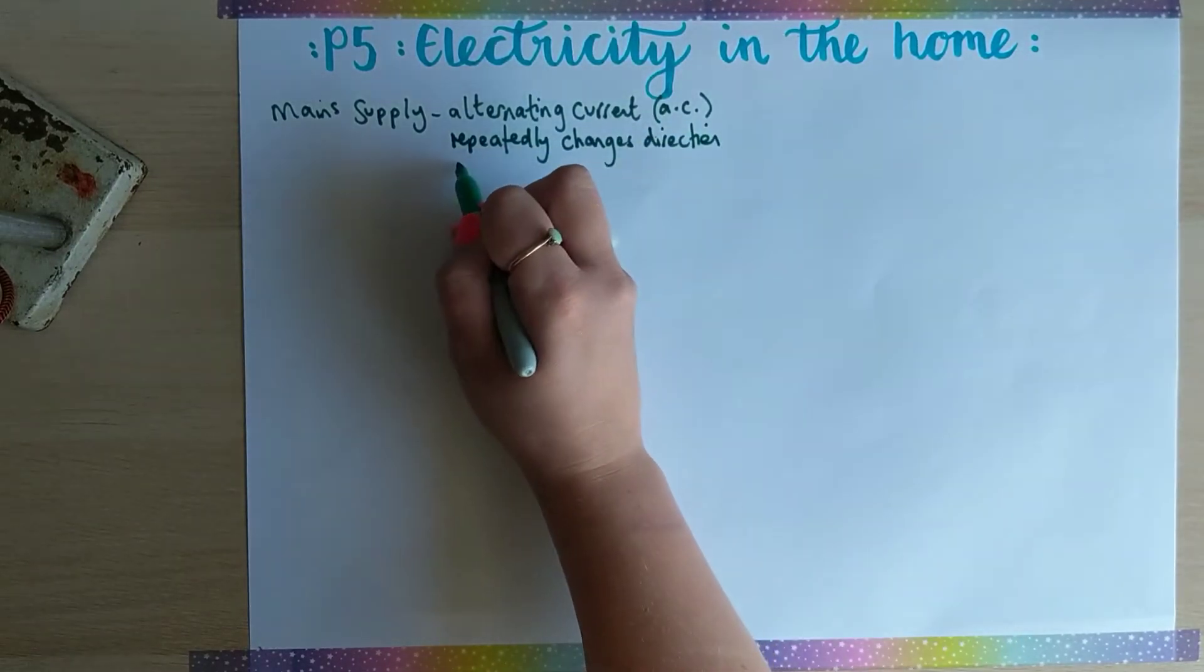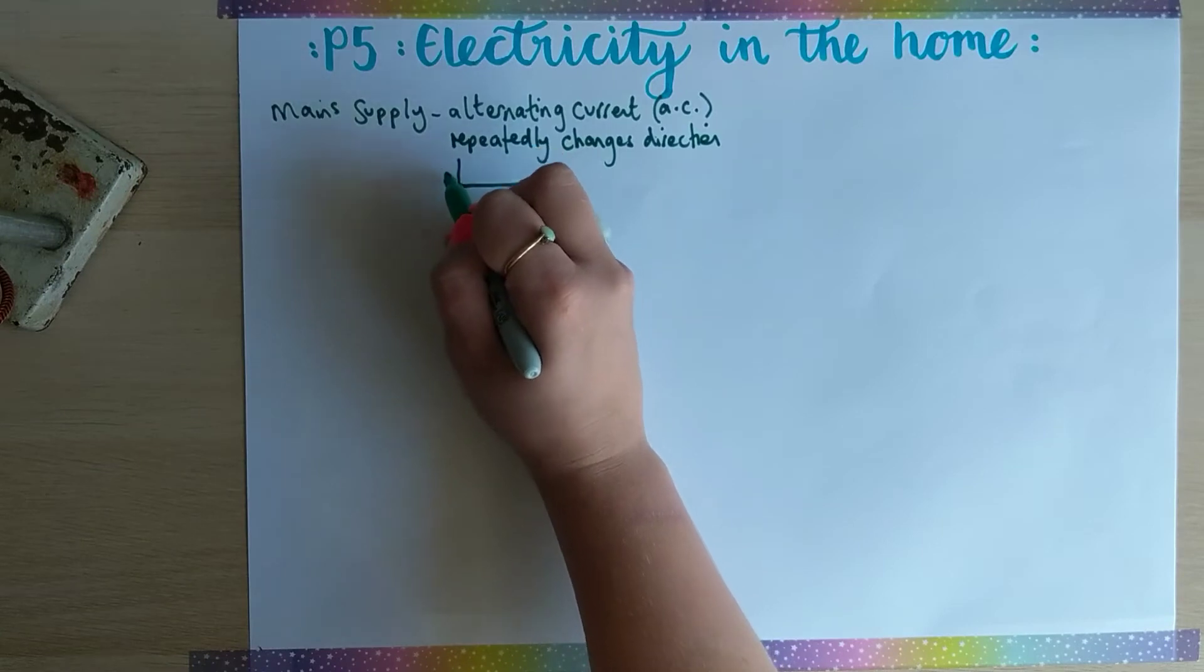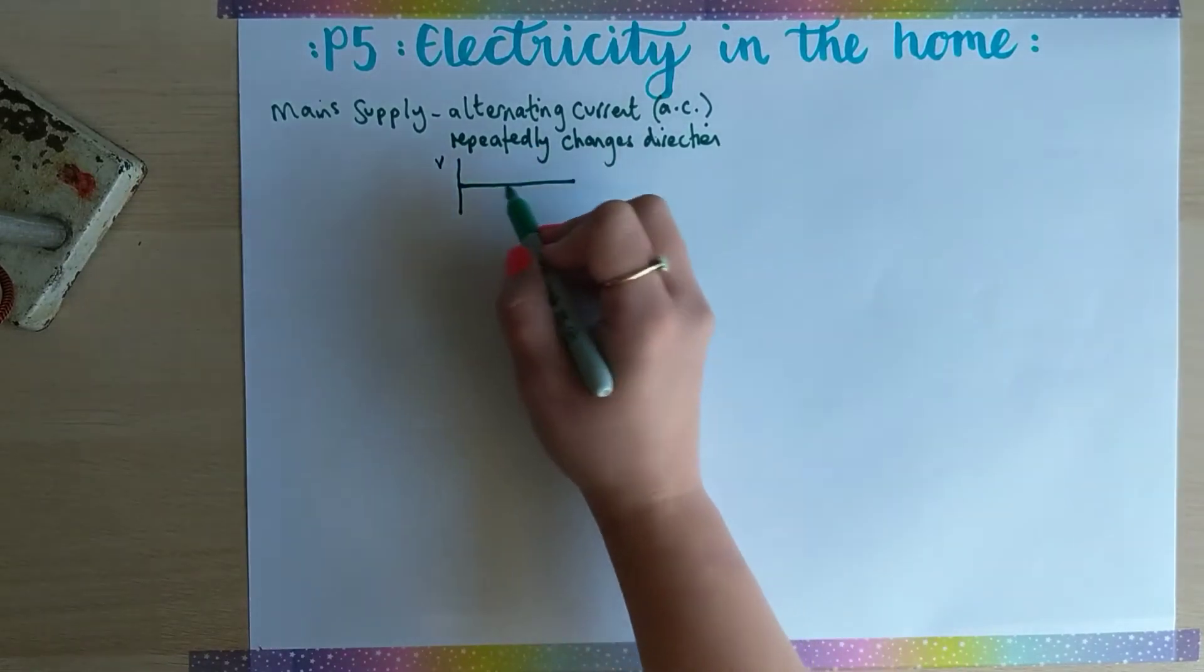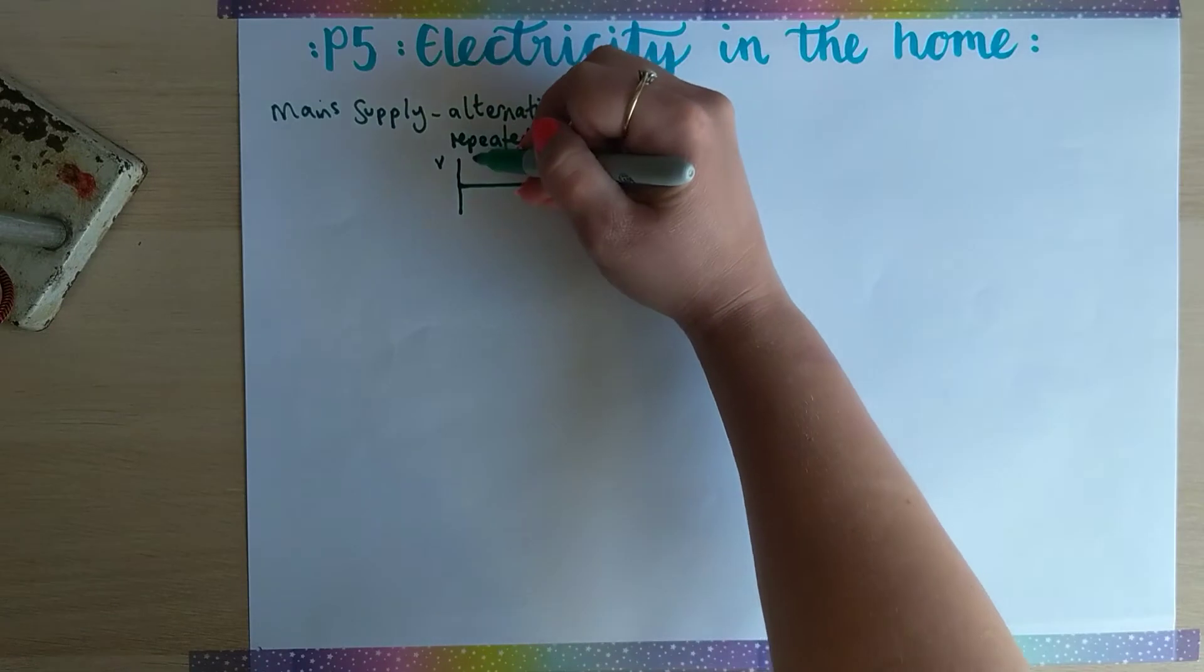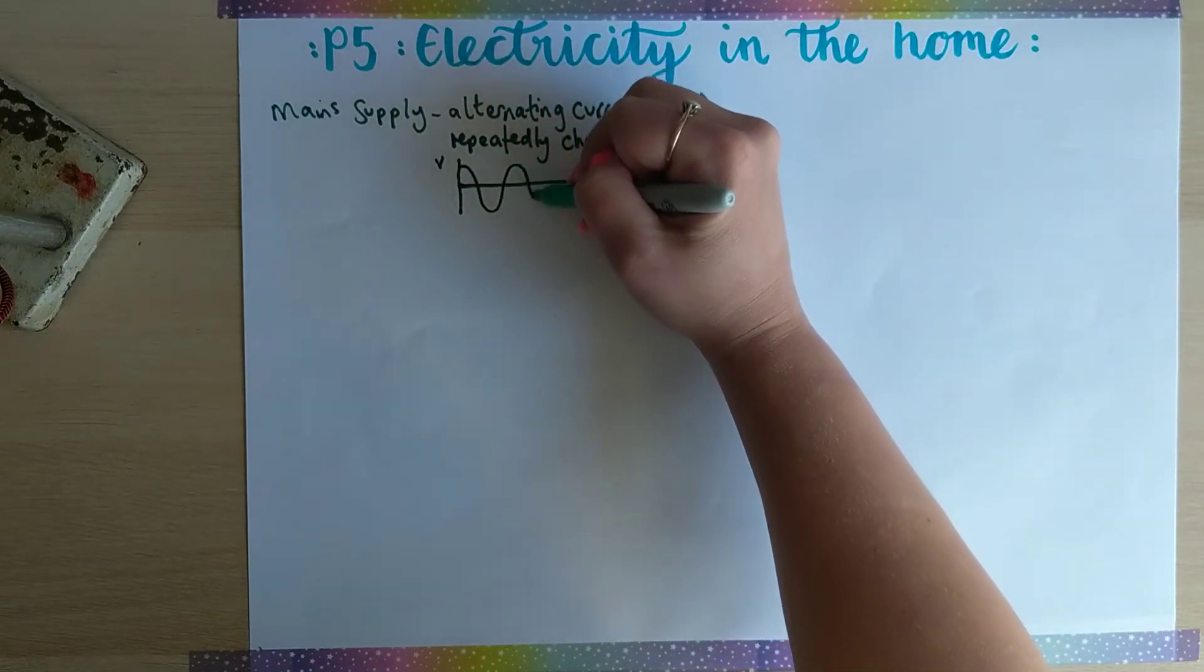Sometimes you'll see this on a graph where it has the potential difference on this side and then the x-axis is time, and you will see it as a graph like this.